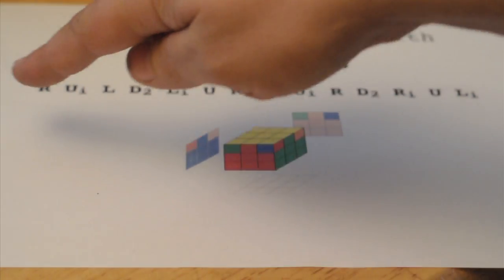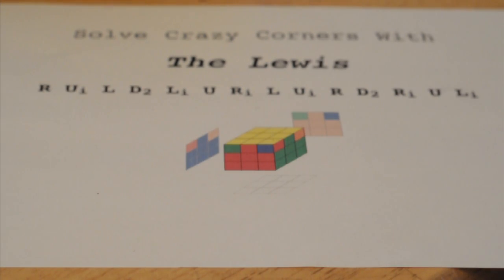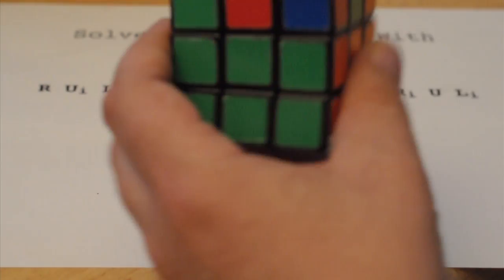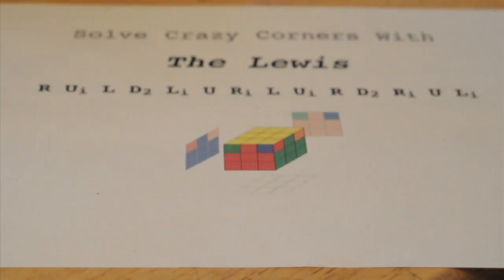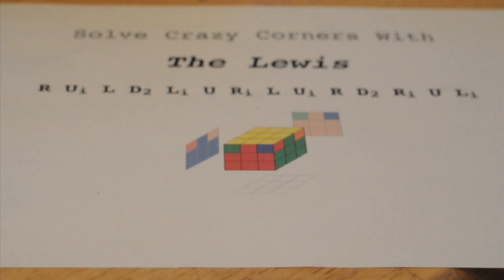This is a long algorithm but it's not as bad as the parity cases on big cubes. It's actually pretty easy to do and it's the shortest number of moves to do it.